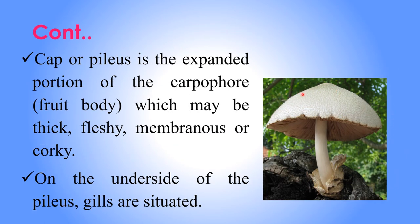The cap or pileus is the expanded portion of the fruiting body. It may be very thick, fleshy, membranous, or cartilaginous in nature. On the underside of the cap, the pileus and gills are situated.